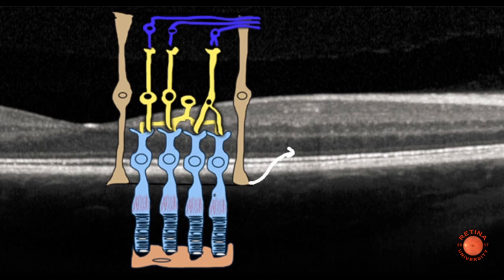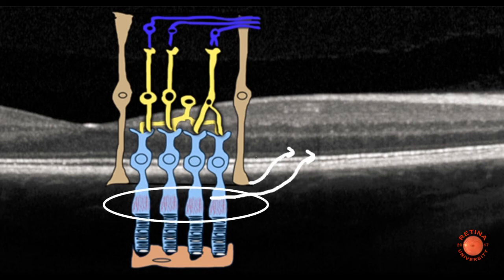The next bright line is the ellipsoid zone of the photoreceptors, and that has to do with the reflectance of the mitochondria, which are, as far as we can tell, highly reflective and form that bright line. In the photoreceptors, the mitochondria are fairly tightly packed in just one area of the photoreceptor, as you can see on this image. And then the last two bright lines are both from the pigment epithelium, and those are very bright.